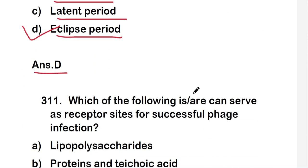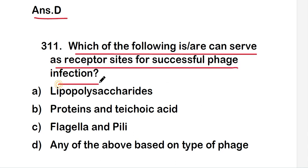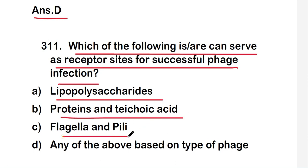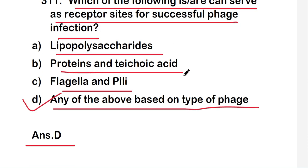The next question is: which of the following can serve as a receptor site for successful phage infection? The options are lipopolysaccharides, protein and teichoic acid; flagella and pili; or any of the above based on type of phage. The right answer is option D — any of the above based on the type of phage. So lipopolysaccharide, protein and teichoic acid, flagella, and pili can all serve as receptor sites for successful phage infection.